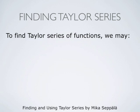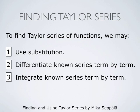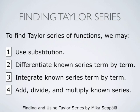To find Taylor series of functions more complicated than the basic ones, we may use substitution, differentiate a known series term by term, integrate a known series term by term, or add, divide, and multiply known series. Division uses an inverted polynomial division algorithm that applies just as well for Taylor series as for polynomials. We may combine all these tricks to find Taylor series or Taylor polynomials for pretty complicated functions.